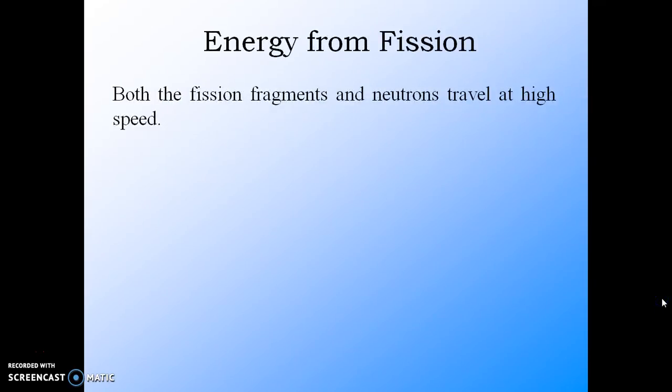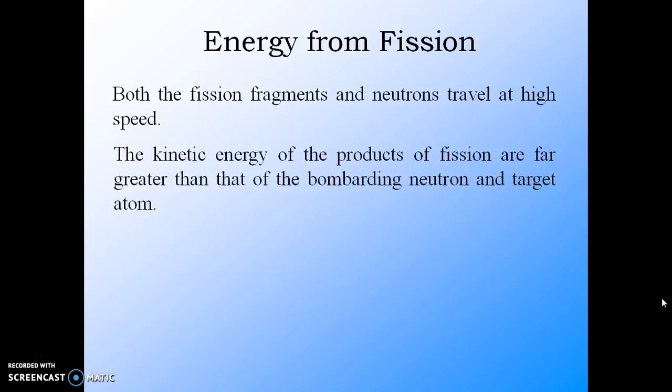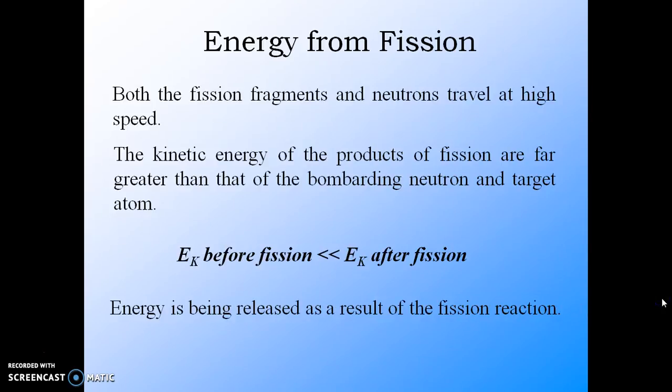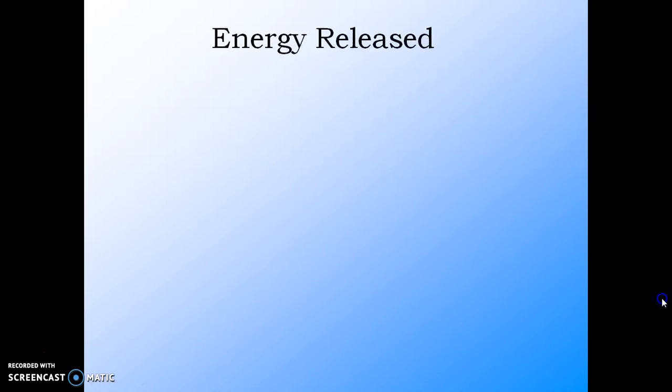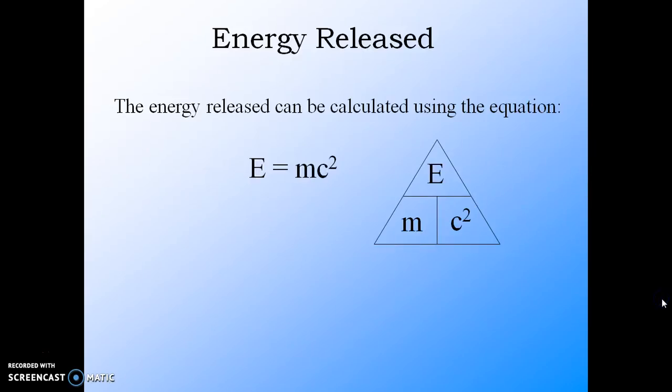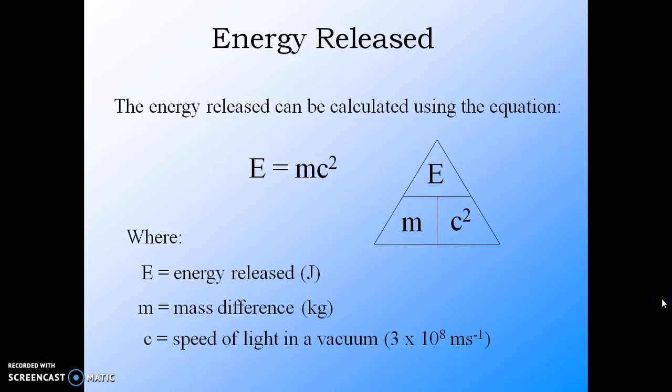Now we calculate the energy released in fission. When fission takes place, both fission fragments and neutrons travel at high speed. The kinetic energy of products of fission are far greater than that of the bombarding neutron and target atom. This difference in the kinetic energy is released as fission energy. The energy can be calculated using the relation E equals mc squared, a very famous mass-energy relation, where m is the mass difference in the product and reacting particles, and c is the velocity of light in vacuum.